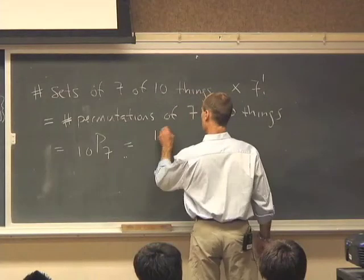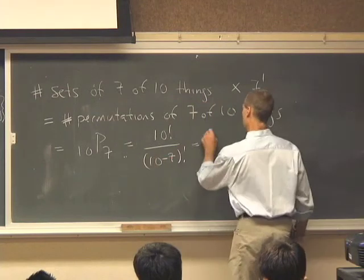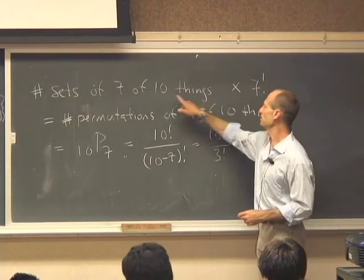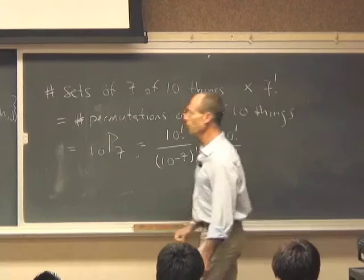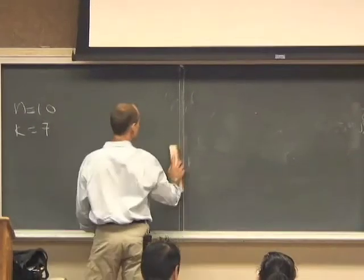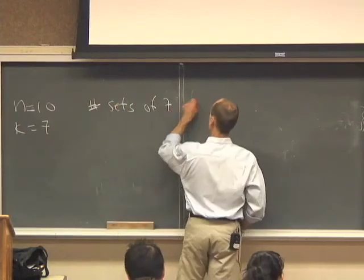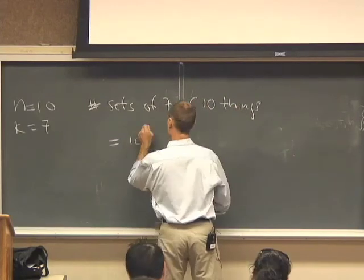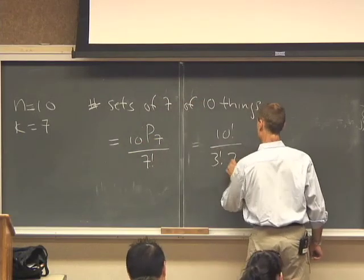Which is equal to 10 factorial over 7. We know that that's equal to that. So the number of sets of 7 of 10 things must be this divided by 7 factorial, OK? So what we've got now is that the number of sets of 7 of 10 things is equal to 10p7 divided by 7 factorial, which is equal to 10 factorial over 3 factorial times 7 factorial, OK?